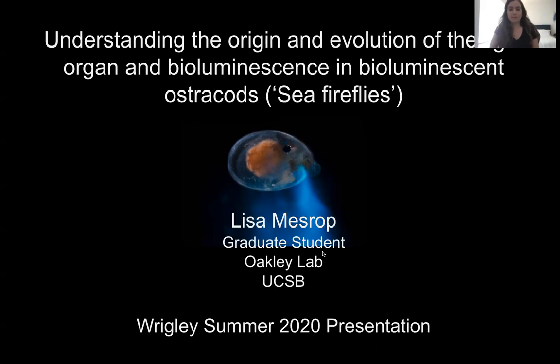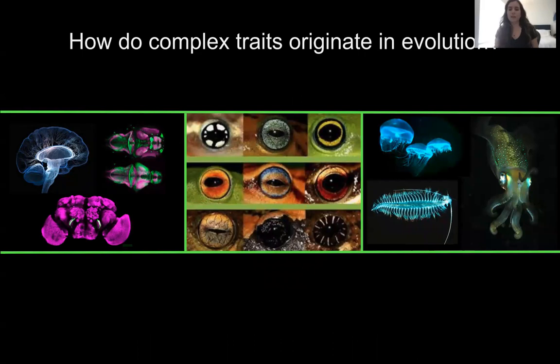I'm broadly interested in how complex traits originate in evolution — traits like vision and bioluminescence. These complex features are made of many components. In order to study the origins of a multi-part trait such as bioluminescence, you need to break it down into its genetic and cellular components and understand how and when these individual components evolved. The complex trait I'm talking about today is bioluminescence and its evolutionary origins in Cypridinid ostracods.